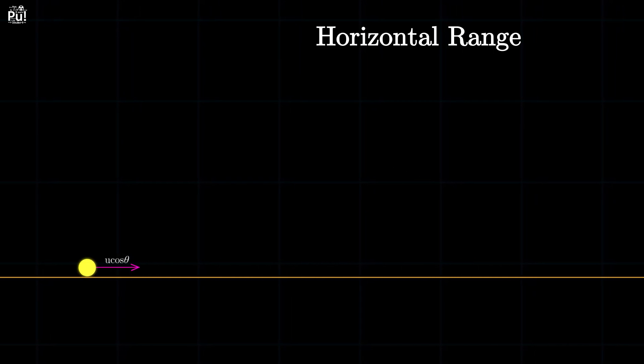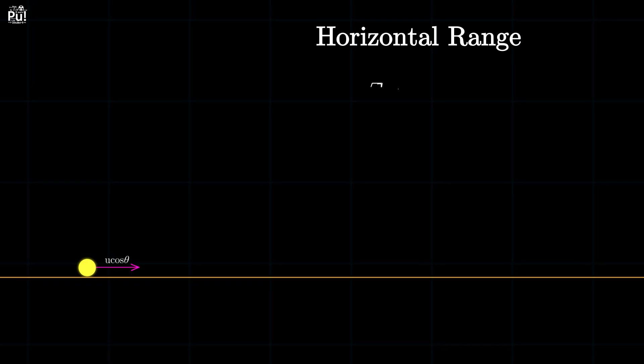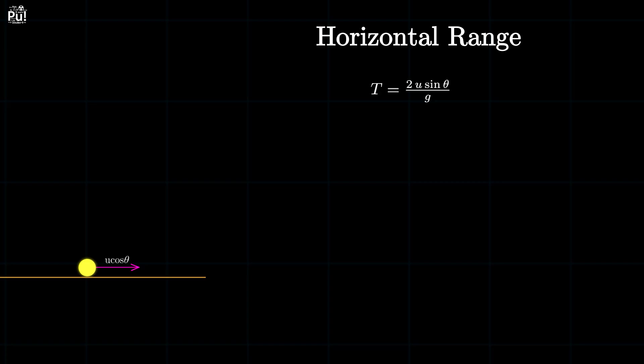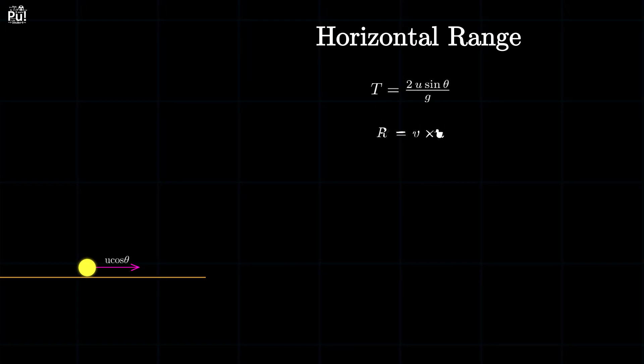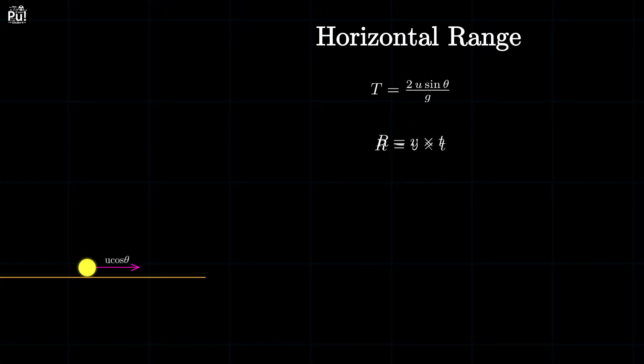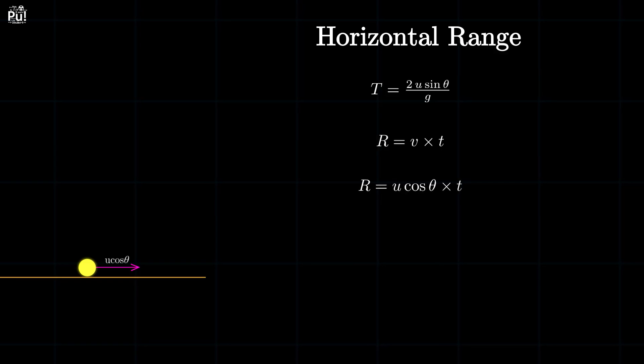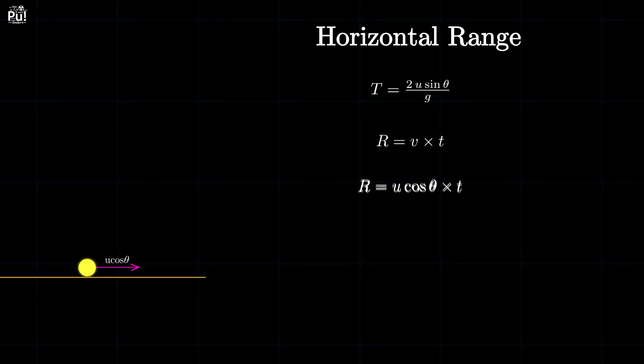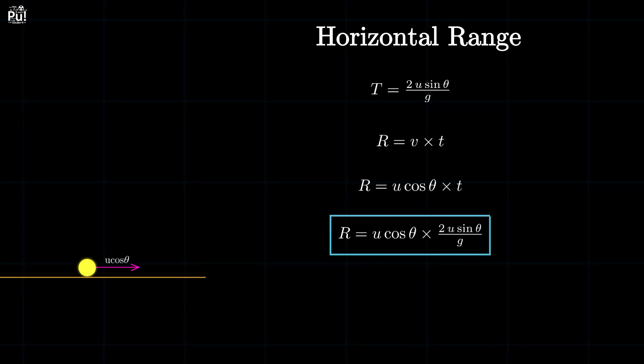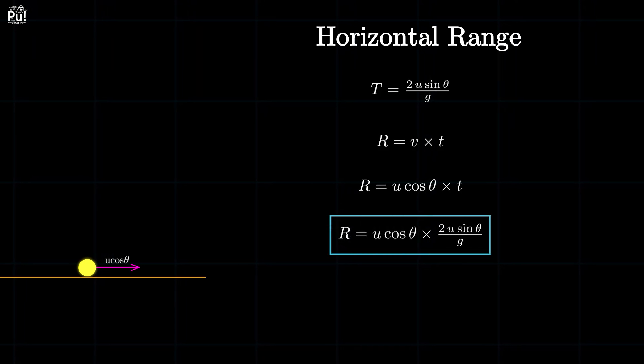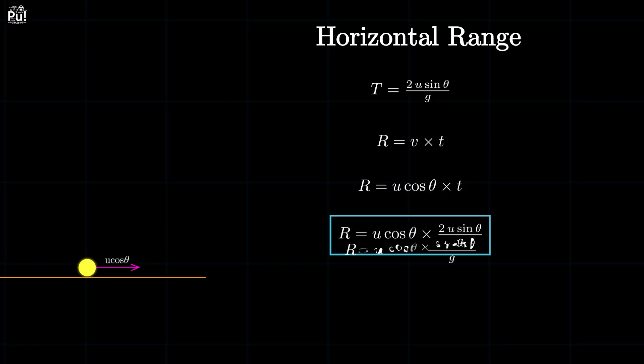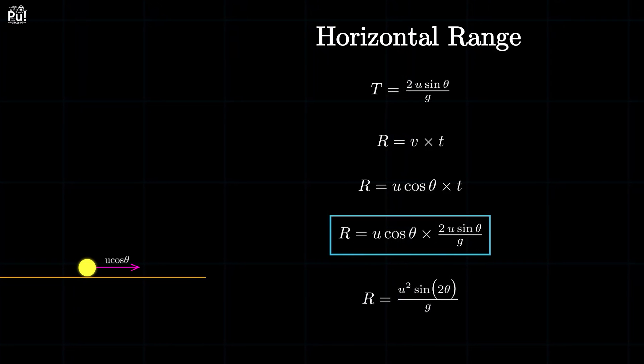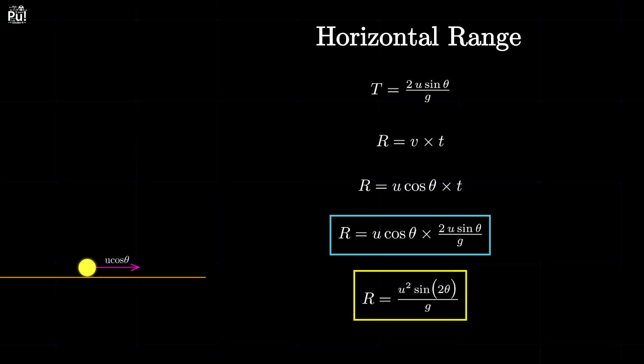And since it stays in the air for a total time of 2u sine theta by g, we can find the horizontal range, the total distance it travels before hitting the ground. Range is just speed multiplied by time. So range equals u cosine theta multiplied by total time of flight. Substitute the time of flight we derived earlier. That's u cosine theta times 2u sine theta divided by g. Multiply everything out. You get range equals u squared times sine of 2 theta divided by g.